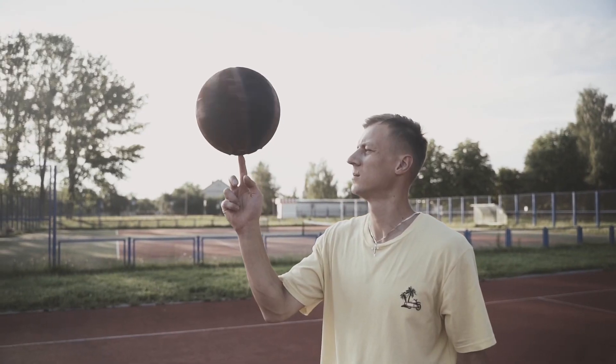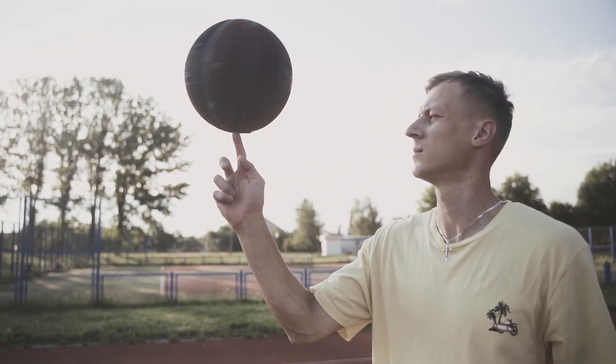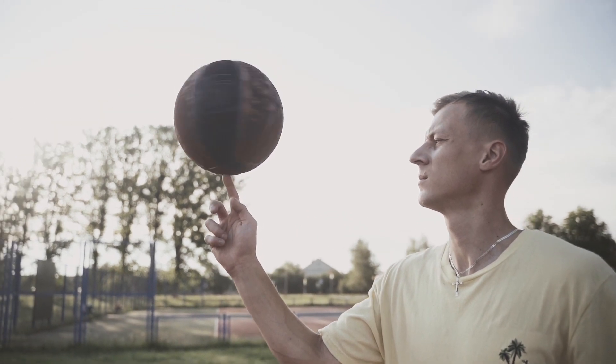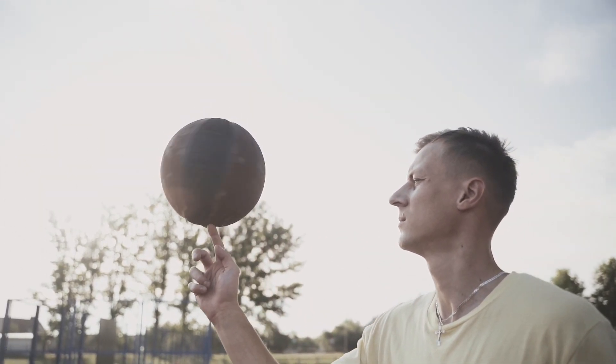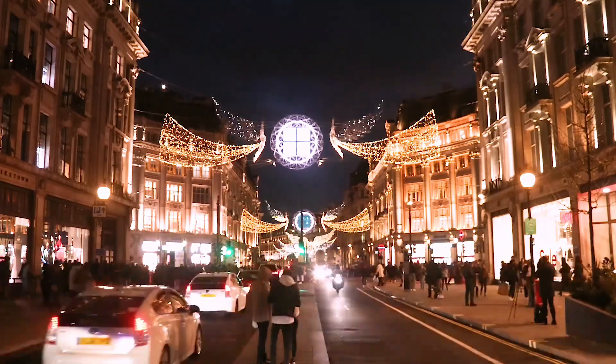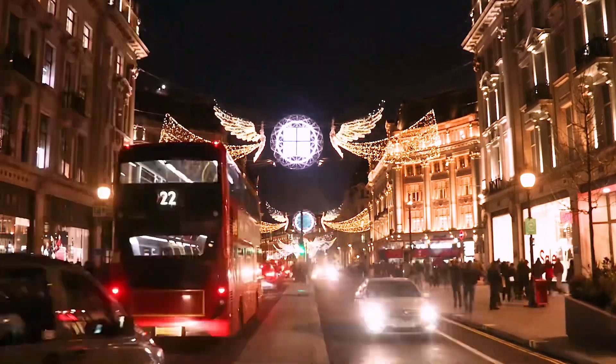Consider spinning a basketball on your finger. A point on the equator of the ball must travel further in a single rotation than a point close to your finger. The equator's tip is moving quicker as a result.